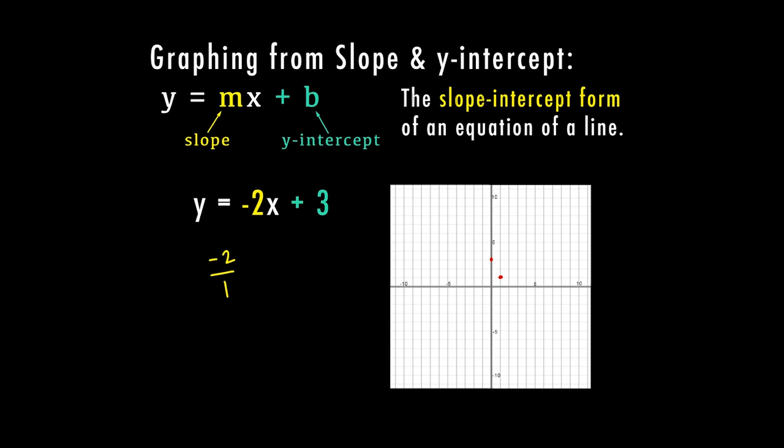So there's my next point. If I continue to do this - down 2, right 1, down 2, right 1 - I'm forming all of my points that I can connect to make my line. Once I have my points, I'm just going to connect the dots to form my line.